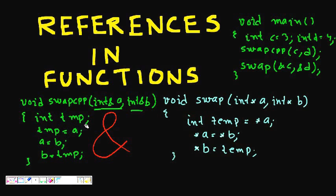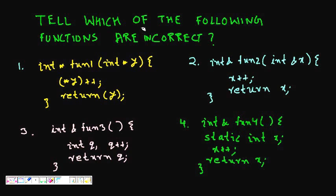So now let's have some quiz on this. We will see references in functions. Let's tell which of the following functions are incorrect. So first one is int star function one, int star y. So I'm passing a pointer to an integer and I'm also returning a pointer. Star y plus plus, so this is perfectly fine - I'm increasing the value of where the pointer points to, and then I return the pointer. So this will change the value of y incremented by one. This looks fine.